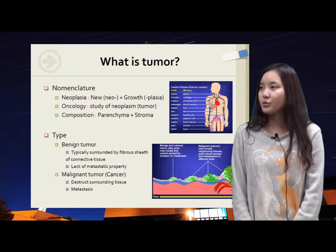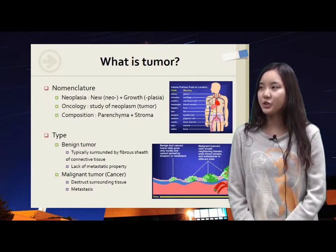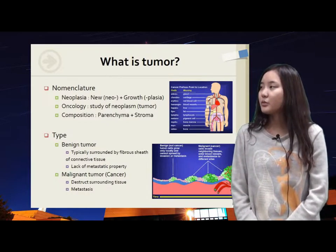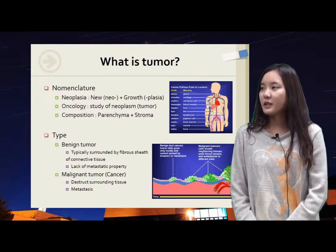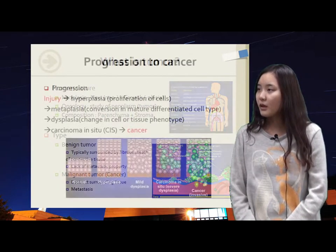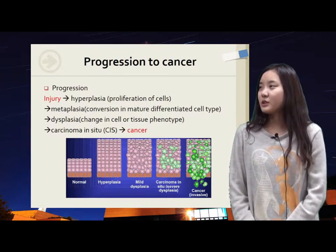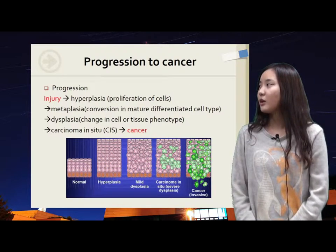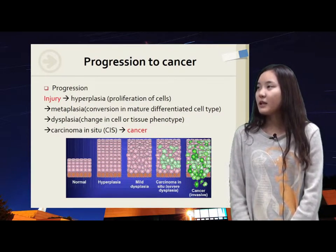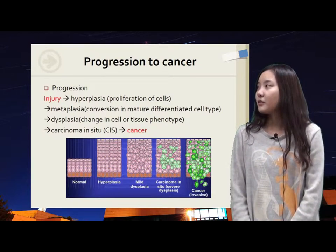There are two types of tumor. Benign tumor is typically surrounded by fibrous sheets of connective tissue, which means it can be removed clearly by surgery. However, malignant tumor, or cancer, has metastatic properties because it can destruct the surrounding tissues. Progression to cancer from injury involves hyperplasia, metaplasia, dysplasia, carcinoma in situ, and finally cancer.